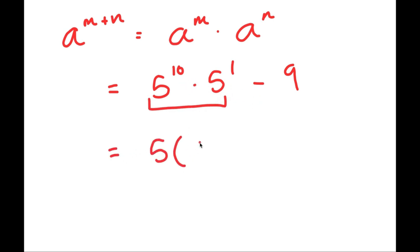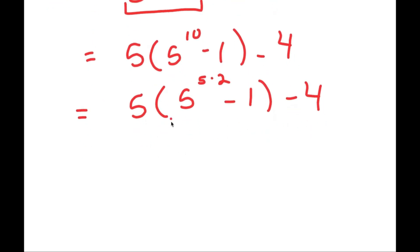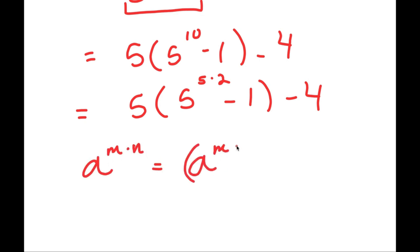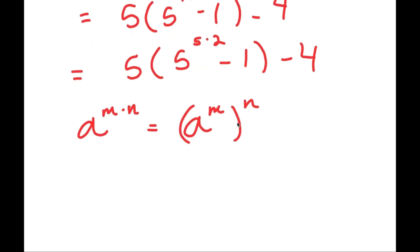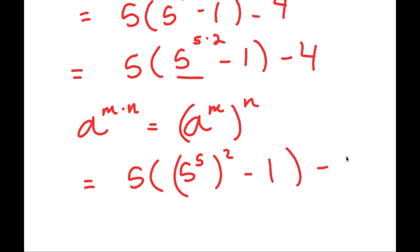So I get 5 times 5 to the power of 10 minus 1 minus 4. I'm rewriting 5 to the power of 10 as 5 to the power of 5 times 2. Another property of exponents to remember is that a to the power of m times n is equal to a to the power of m, to the power of n. So 5 to the power of 5 times 2 can be rewritten as 5 to the power of 5, to the power of 2.